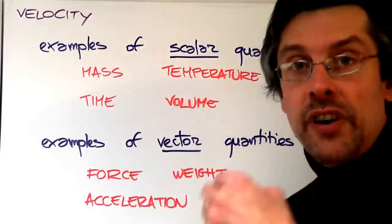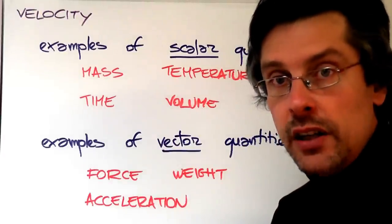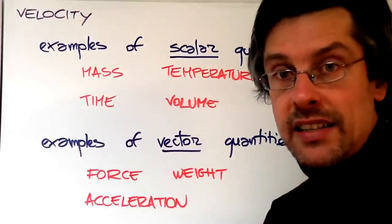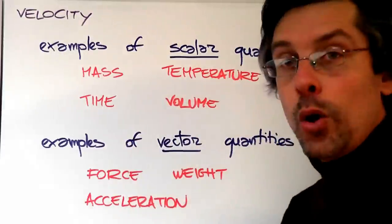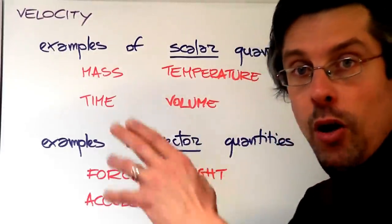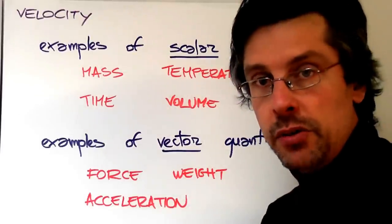For instance, mass, you know, that is the amount of matter in an object, and that doesn't have a direction. Therefore, mass is a scalar, as well as time or temperature or the volume of an object. These are all scalars. They're just given by a number and a corresponding unit.